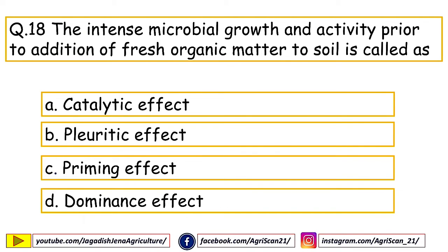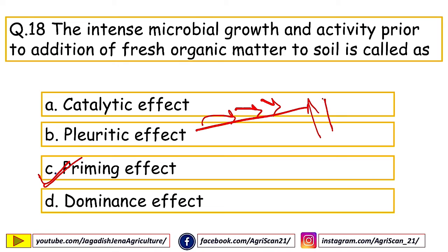Next question: the intense microbial growth and activity prior to addition of fresh organic matter to soil is called — options are catalytic effect, pluritic effect, priming effect, dominance effect. The right answer is priming effect. When fresh organic matter or fresh residue is added to soil, microbial population grows highly and microbial respiration is very high — that condition is called the priming effect.